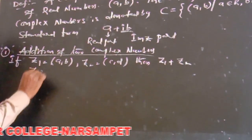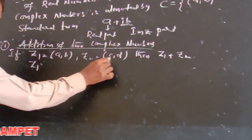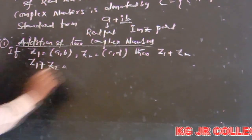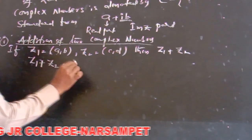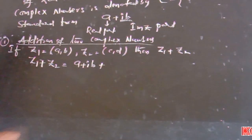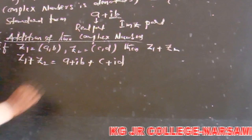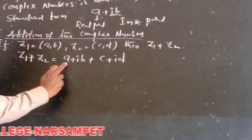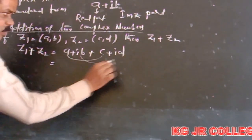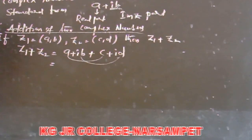Here I am adding two complex numbers. Now Z1 + Z2 equals — for Z1 the complex form is a + ib, and plus the complex form of Z2 is c + id. How to add two complex numbers? Adding real part to real part and imaginary part to imaginary part. That is the concept of addition of two complex numbers.